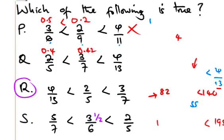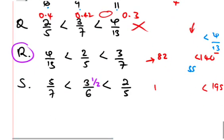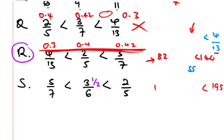For 4/13, 13 goes into 40 to give approximately 0.3. And we have 0.4 and 0.42. This confirms option R is correct: 0.3 < 0.4 < 0.42.